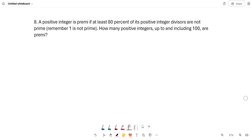This is week 65 quiz, problem 8. A positive integer is premie if at least 80% of its positive integer divisors are not prime. Remember, one is not prime. How many positive integers up to and including 100 are premie?